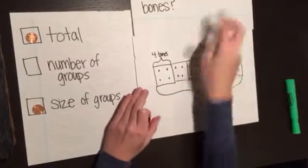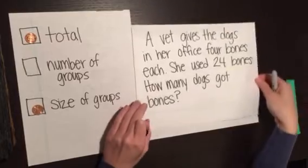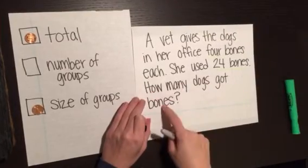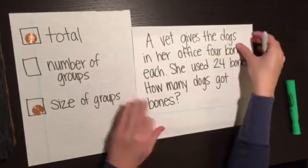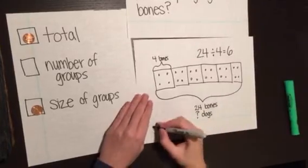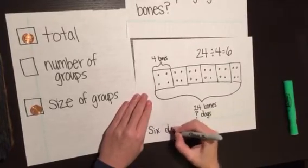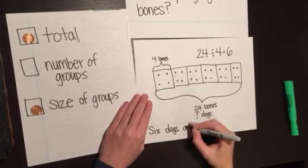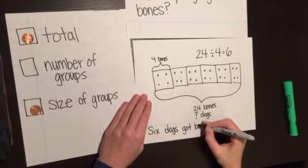Last is my word sentence. My question again said how many dogs got bones? So I can write just using these words: six dogs got bones.